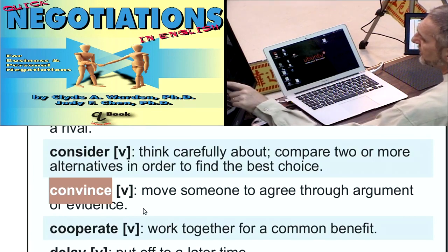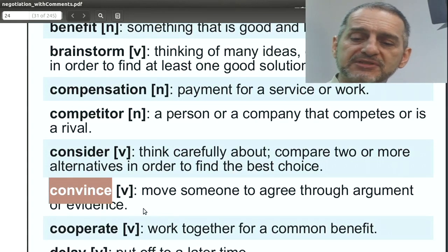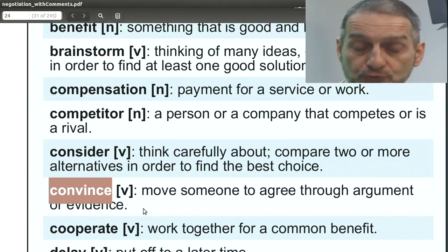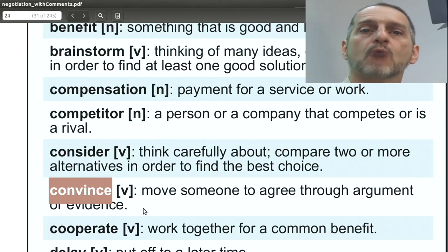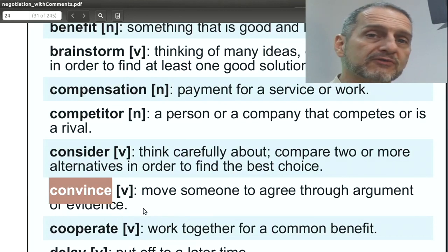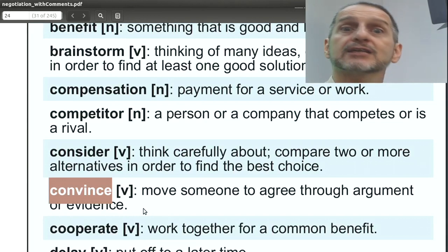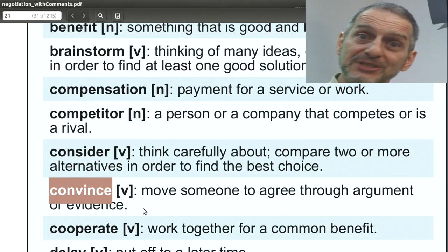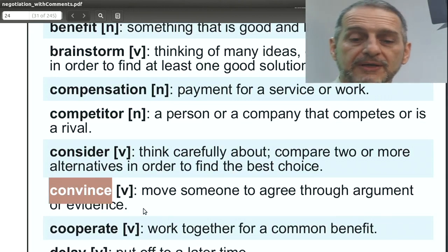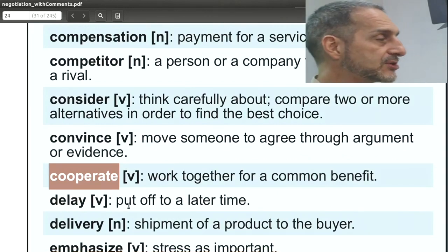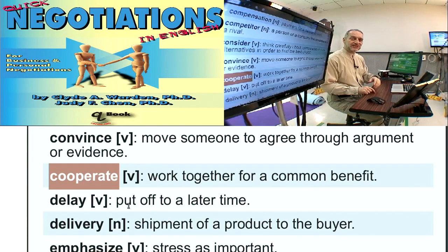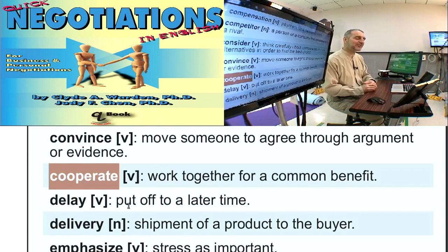'Convince' means to help the other side believe that what you're saying is true. It's kind of the opposite of assume — you're not assuming it's true, you're convincing them it's true. You can say: 'I'm going to try to convince you that this is a great deal. Are you convinced yet?' If they say they're not convinced, you can say: 'We can try another thing to convince you — how about a discount on the shipping terms? Does that convince you?' It's a great word to use.